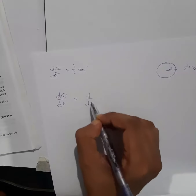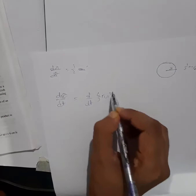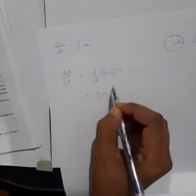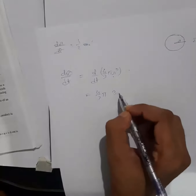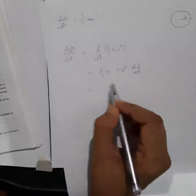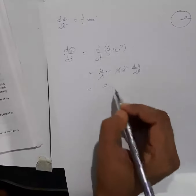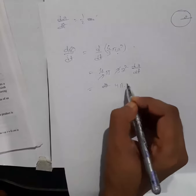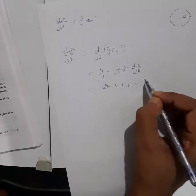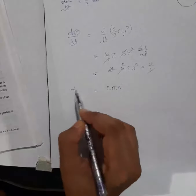The volume of a sphere is (4/3)πr³. Differentiating this, we get dV/dt = (4/3)π · 3r² · dr/dt. Substituting dr/dt = 1/2, the 3s cancel and we get dV/dt = 2πr².